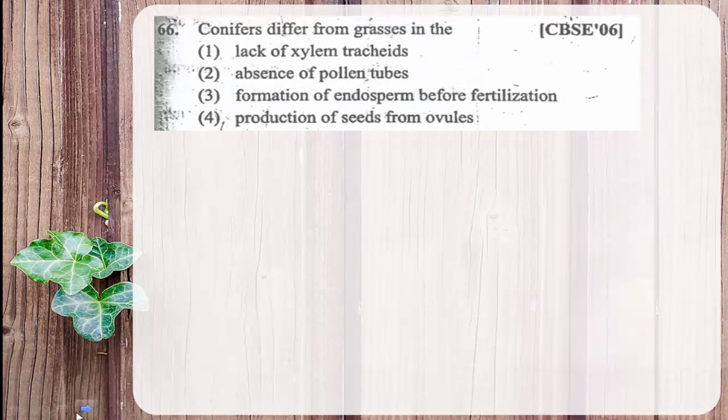The next question: conifers differ from grasses in the — options given are: lack of xylem tracheids, absence of pollen tubes, formation of endosperm before fertilization, and production of seeds from ovules. The question refers to gymnosperms and angiosperms, since conifers are gymnosperms and grasses are angiosperms. Which character of gymnosperms is completely different from angiosperms?